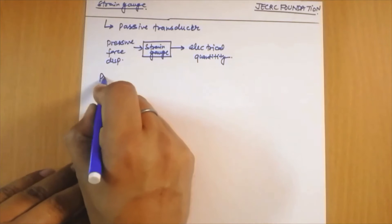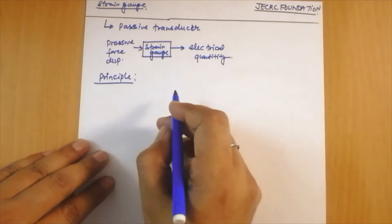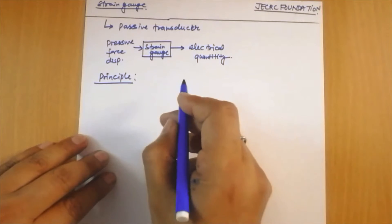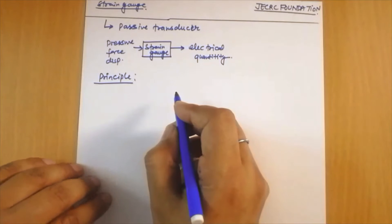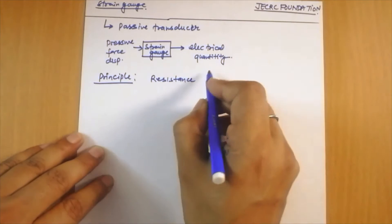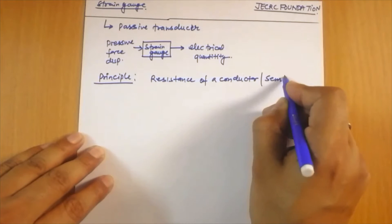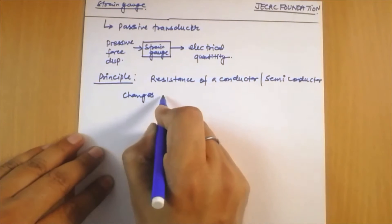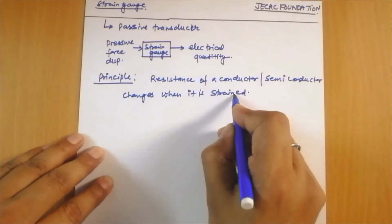The basic principle behind the strain gauge is very simple. It works on the property that the resistance of a conductor or a semiconductor changes when it is strained.